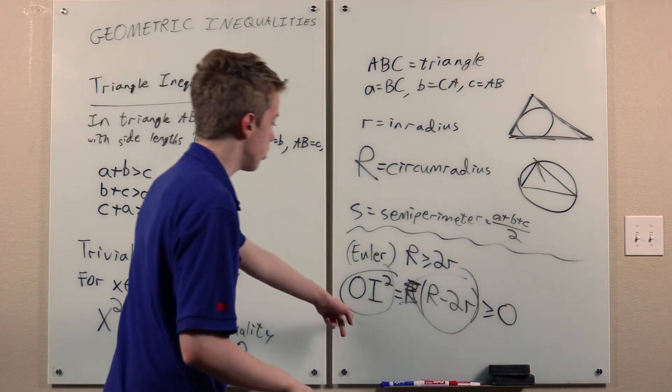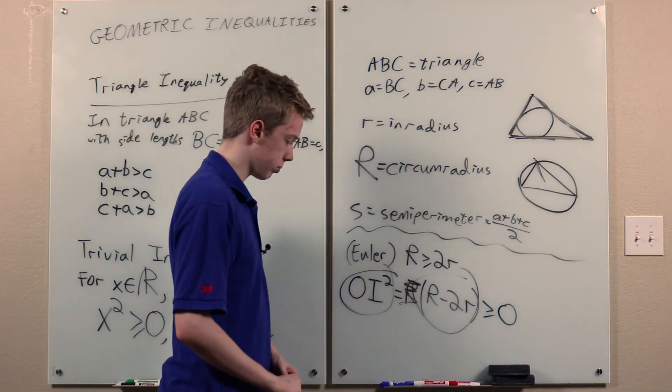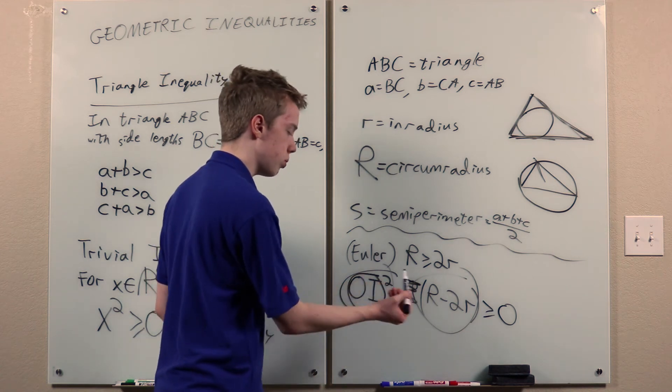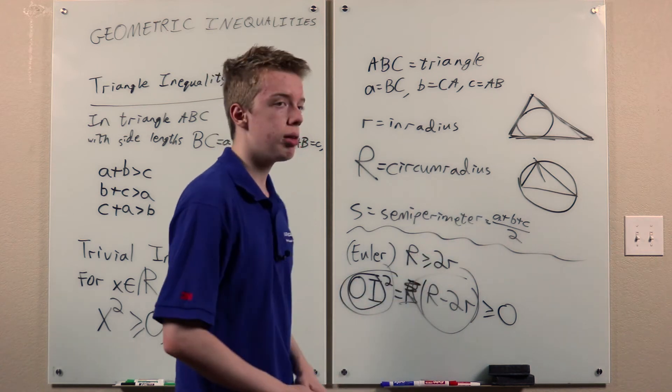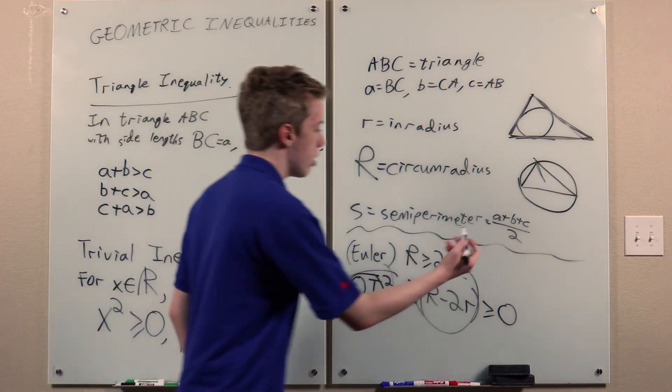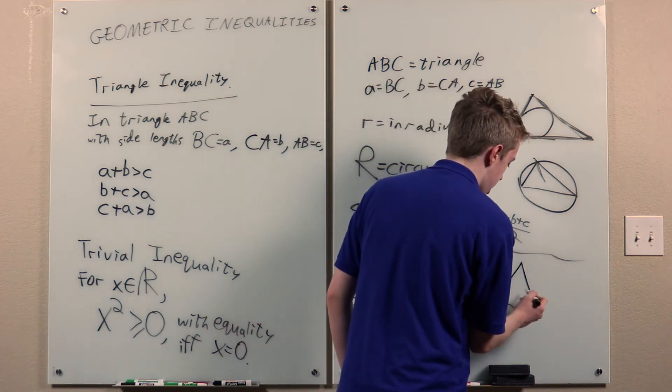And furthermore, this would give us that equality holds if and only if this is zero, which would mean that the circumcenter is the incenter. Which can easily be seen to imply that the triangle ABC is equilateral. And we can verify that we do in fact have equality in that case.